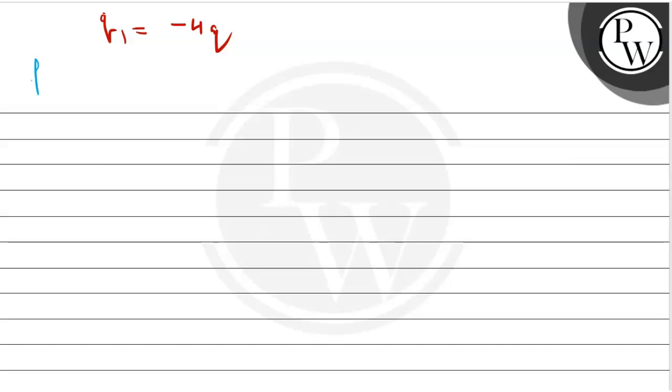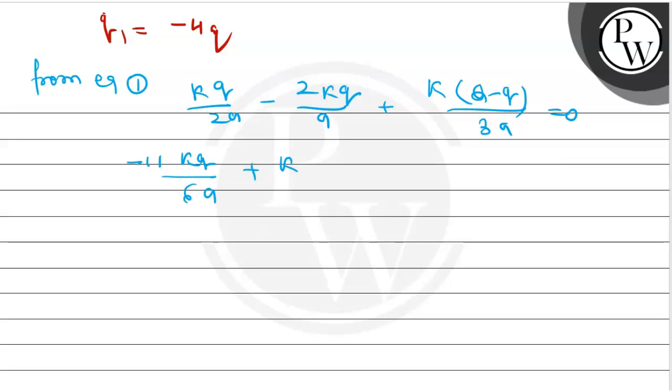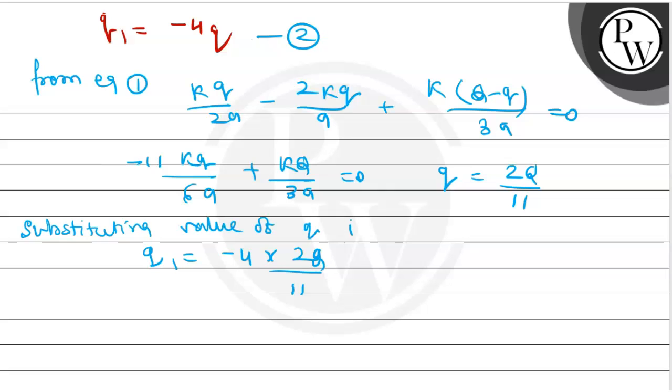Now from equation 1, KQ upon 2A minus 2KQ upon A plus K capital Q minus Q upon 3A equals to 0. This is minus 11KQ upon 6A plus K capital Q upon 3A equals to 0. Q is equals to 2 capital Q by 11. So Q1 is equals to minus 4 into 2Q upon 11. Substituting value of Q in equation 2.